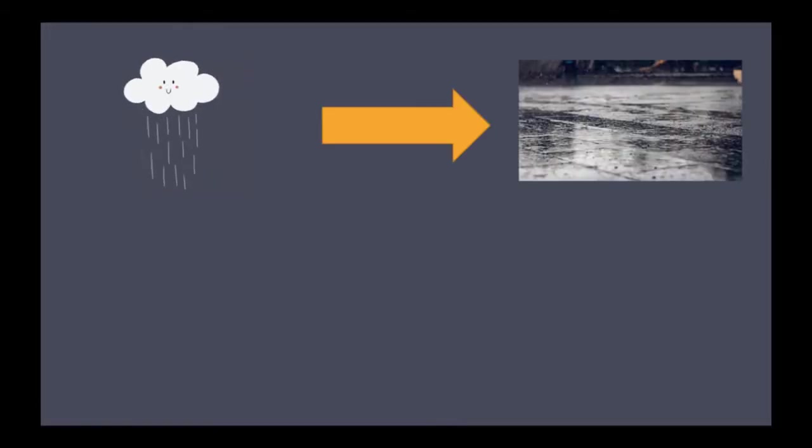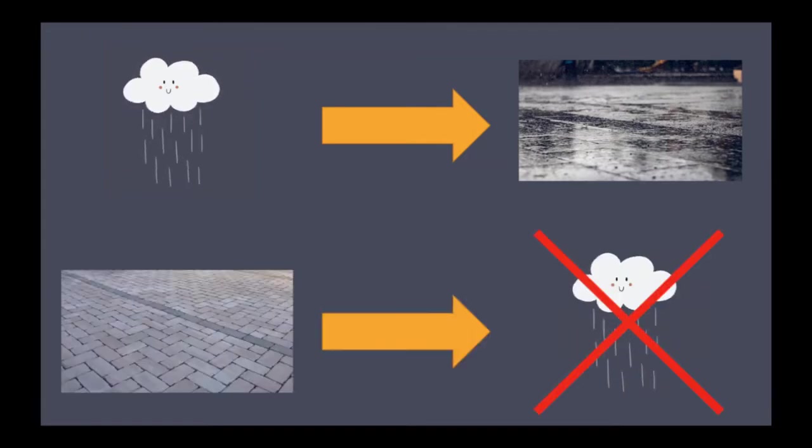For example, if someone said to you, if it rains today, then the ground will be wet. You'd know that this is also true: if the ground is dry, then it hasn't rained today. This is called the contrapositive.